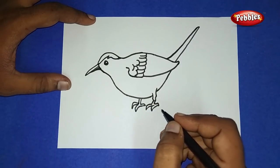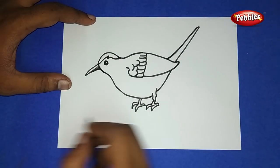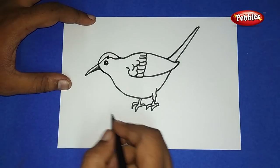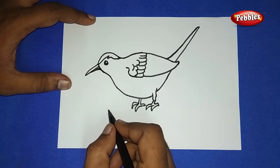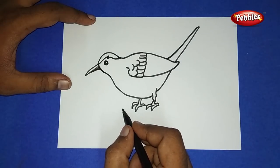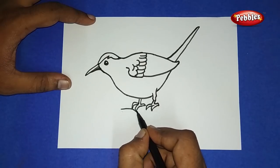And now we have finished drawing the legs of the bird. At the bottom, draw a slanting line like this.